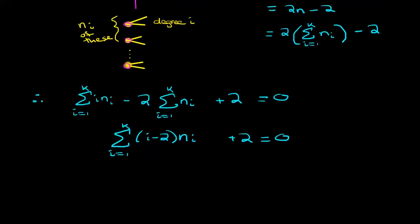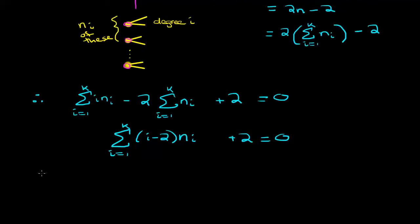If we expand this out for every value of i from 1 up to k, we'll get minus 1 times n_1 plus 0 times n_2 plus 1 times n_3 plus 2 times n_4 plus 3 times n_5, keep going until you get (k-2) times n_k, finally plus 2, and it all equals 0.